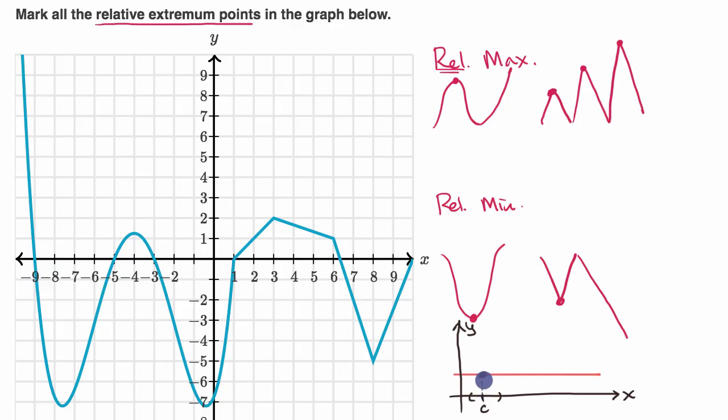If you construct an open interval around c, you notice that the value of our function at c, f of c, is at least as large as the values of the function around it, and it is also at least as small as the values of the function around it. So this point would also be considered a relative minimum point. But that's an edge case that you won't encounter as often.